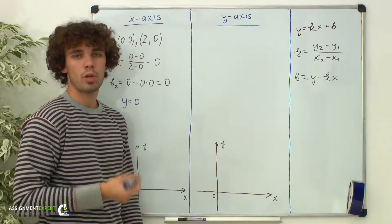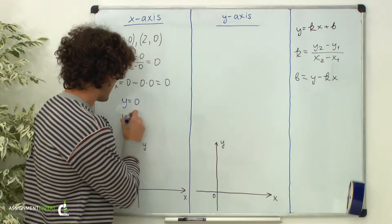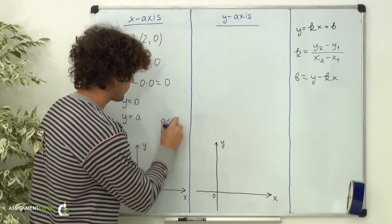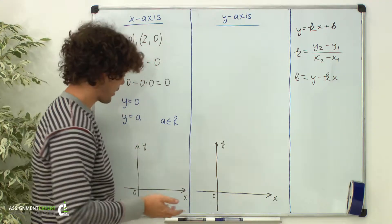Similarly, we can write an equation for any horizontal line. The equation will be y equals a, where a is a real number. On a graph it looks like this.